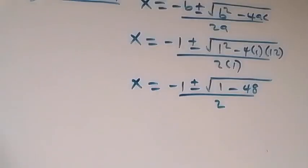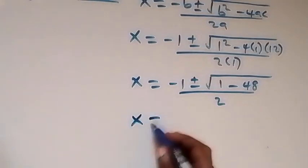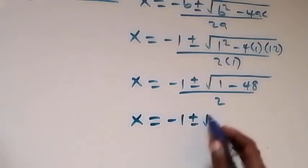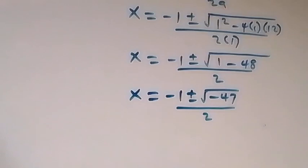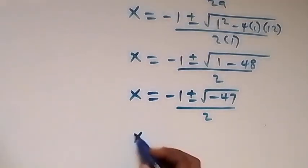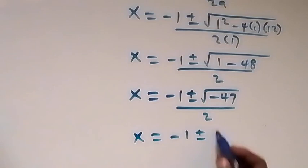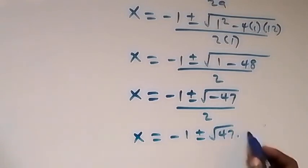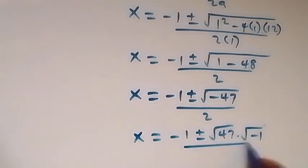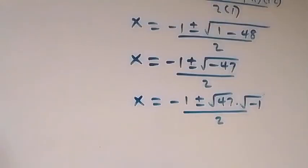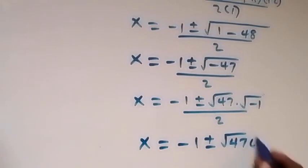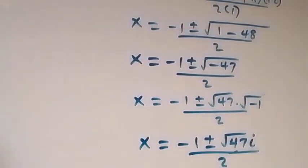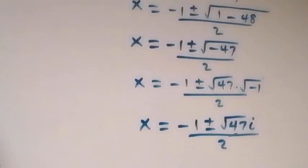That gives x equals minus 1 plus or minus square root of 1 minus 48, over 2, which is x equals minus 1 plus or minus square root of minus 47 over 2. This can be written as x equals minus 1 plus or minus square root of 47 times square root of minus 1 over 2, giving x equals minus 1 plus or minus root 47 i over 2 — two complex solutions.